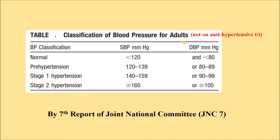This classification of blood pressure is for adults who are not on anti-hypertensive treatment. It was given by the Joint National Committee in their seventh report, JNC7. The latest version is JNC8, but the classification in JNC8 is the same as in JNC7. We have two columns: systolic blood pressure and diastolic blood pressure. The normal range is systolic less than 120 and diastolic less than 80.